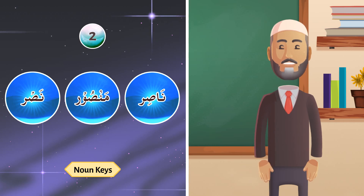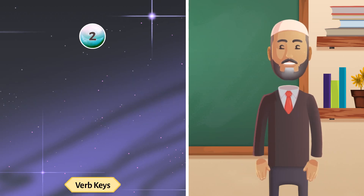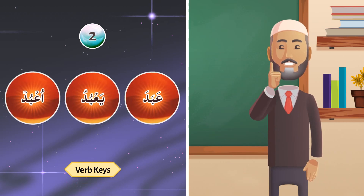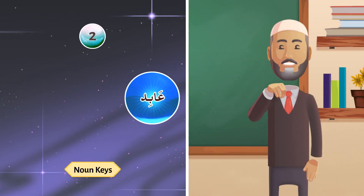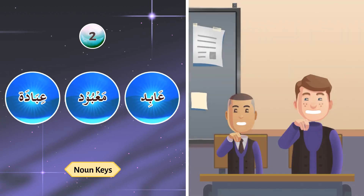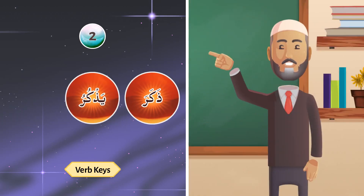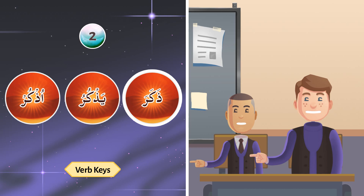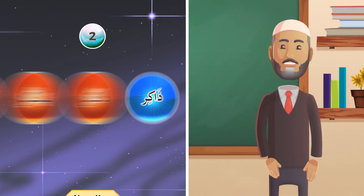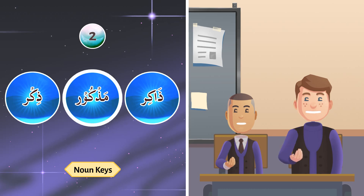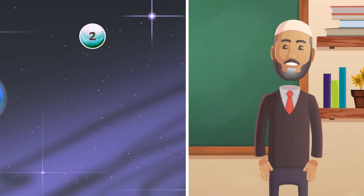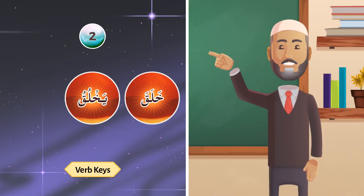On the pattern of nasara yansuru we have: 'abada, dhakara, and khalaqa. Repeat after me: 'abada — ma'boodah — 'ibadah. Dhakara yadhkuru udhkur — dhaakirun — madhkoor — dhikr. Khalaqa yakhluqu ukhlaq.